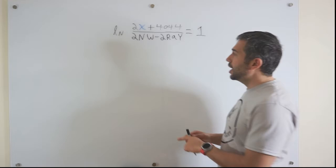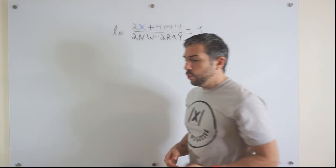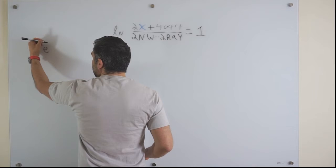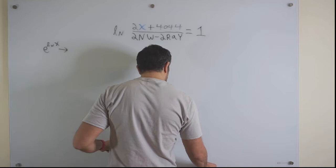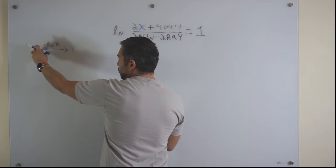First thing you want to do is get rid of this log, because we have a logarithmic equation with a natural base of e. To do that, we look at our inverse properties. The inverse property in question is, if you take e to the power of ln of x, that becomes simply x. The e cancels out the ln, and then that becomes x.